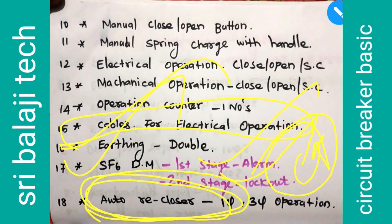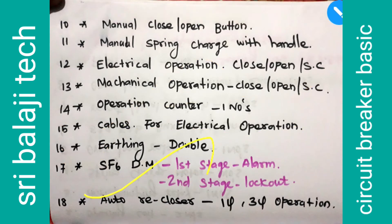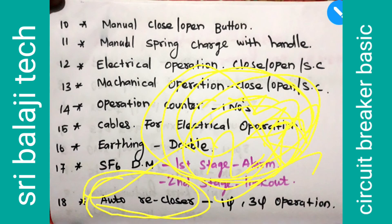This is the auto recloser. This is important — you can touch a single-phase or three-phase fault. If you touch lightning or something like that, the breaker will trip. If you don't have a permanent fault, you will get a reclosure. In two seconds, automatically, one single-phase or a half-breaker operation will automatically re-close.